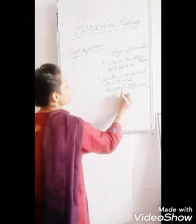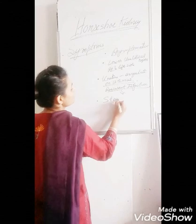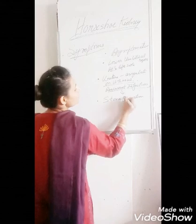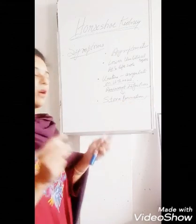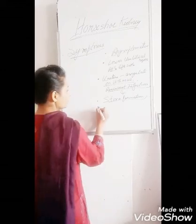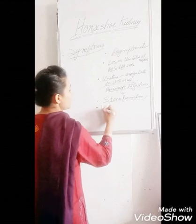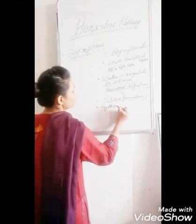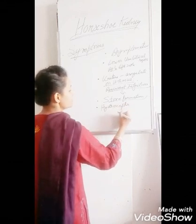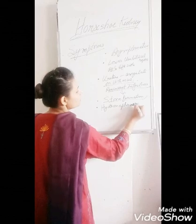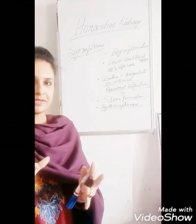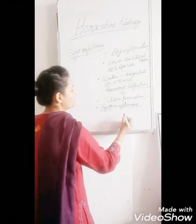The recurrent infections will later result in stone formation in the ureters, because of the angulation of the ureters over the isthmus. In chronic cases, there will also be hydronephrosis — when the kidney increases in size because of the stasis and obstruction, resulting in a dilated kidney.